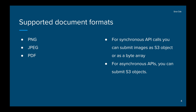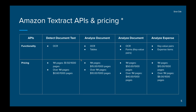Now let's have a look at the APIs available as part of Amazon Textract and their capabilities along with pricing. Note that the pricing shown here is for the US East 1 North Virginia region and may differ for other regions — refer to the link in the disclaimer for accurate pricing. The first API is Detect Document Text: if you want to perform simple OCR and extract all text from a document, use this API. Pricing is $1.50 per 1,000 pages for the first 1 million pages per month, and $0.60 per 1,000 pages beyond that.